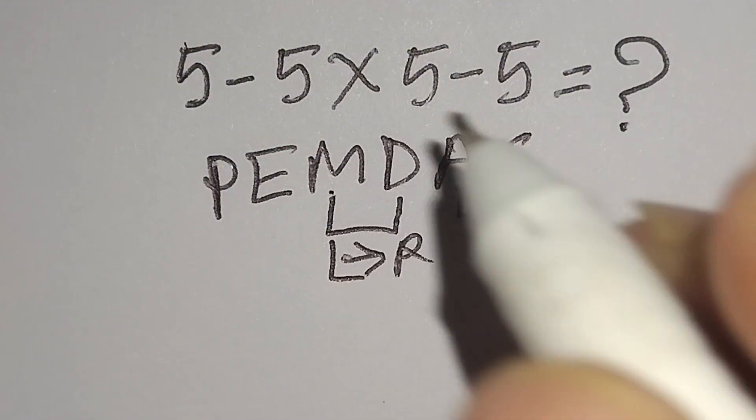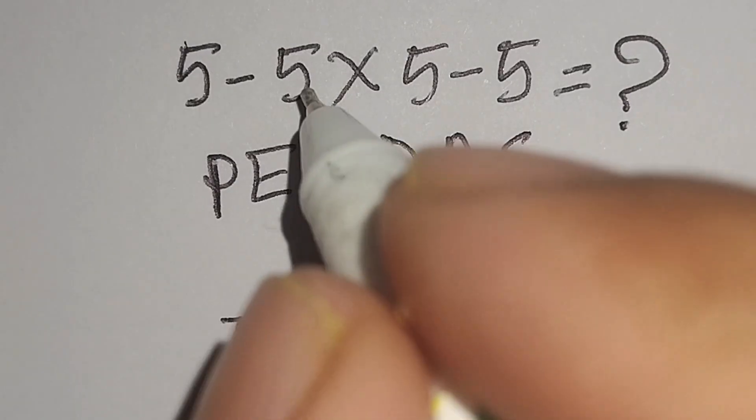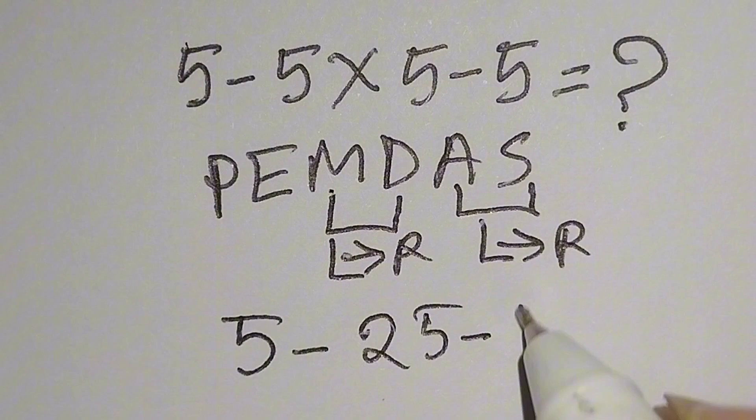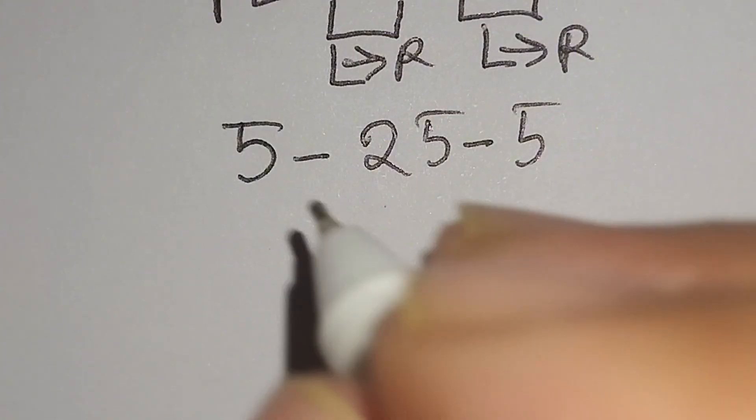Therefore, at first we have to work with this multiplication. Here, 5 minus 5 times 5 gives us 25, minus this 5. Now I have to work with this subtraction, then this subtraction.